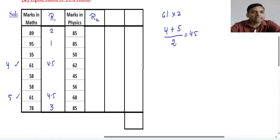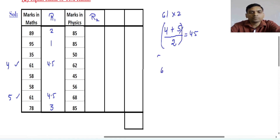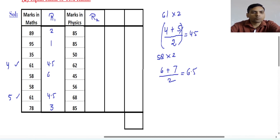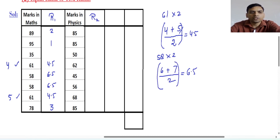The next number is 58, and this also appears 2 times. We have used ranks up to 5, so the next ranks are 6 and 7. We take the average of 6 and 7, which is 6.5. We put 6.5 for both occurrences of 58. The next number is 35, and we have used ranks up to 7, so the next rank is 8. So rank 8 is assigned to 35.